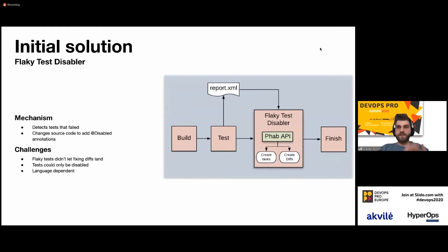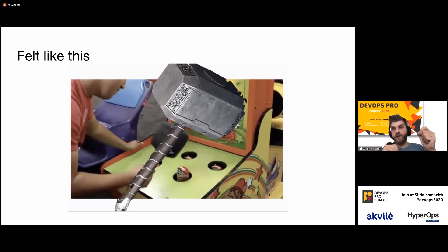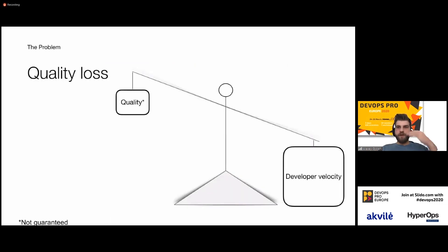A third problem is that this approach is fully language dependent. At Uber we have multiple monorepos — one for Java, one for Go, one for web code, and others — and this annotation-based approach is not going to work on Go. It felt like doing a whack-a-mole game trying to find the flaky test that hides as soon as you try to reproduce it — like hammering down whack-a-mole, but just with a bigger hammer. This led to perhaps a bit better developer velocity, but because we disabled so many tests, some of which may have been perfectly valid, we jeopardized quality.